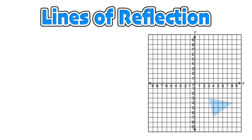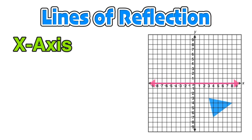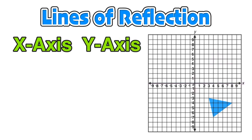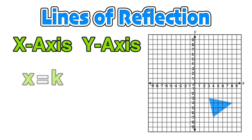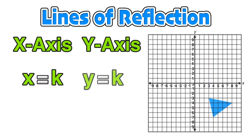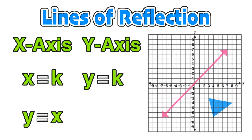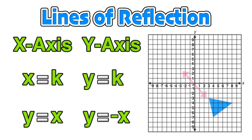For this lesson, we will need to be familiar with common lines of reflection. We know the x-axis as the horizontal line that passes through the origin, the y-axis as the vertical line that passes through the origin, the vertical line equation x equals k (in this case k equals 3), the horizontal line equation y equals k (in this case y equals negative 2), the line y equals x, and the line y equals negative x.